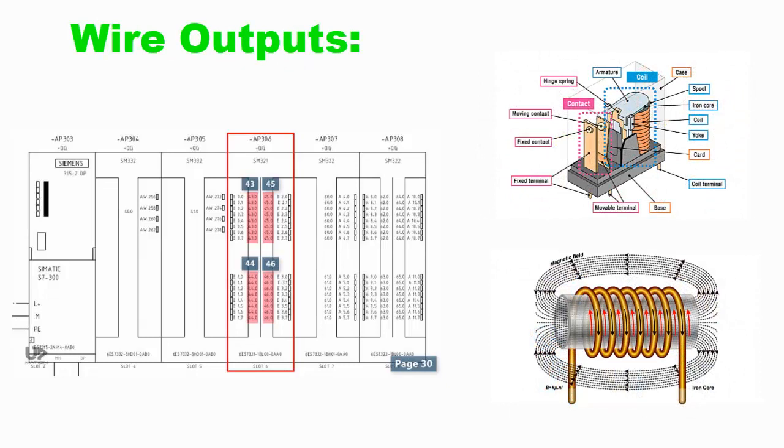Wire outputs: Connect output devices, relays, solenoids, etc., to the corresponding terminal blocks. Follow the same stripping and crimping process as for input wires.